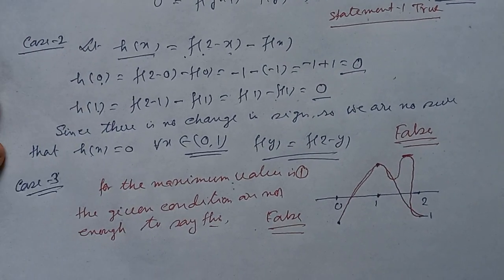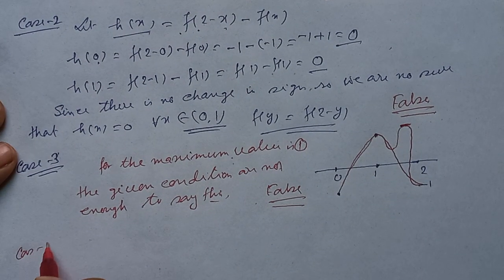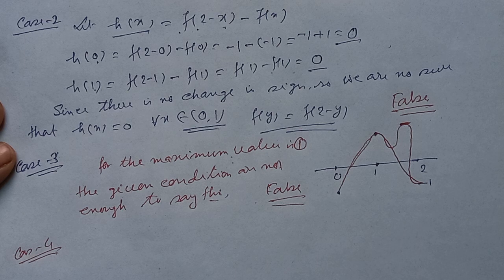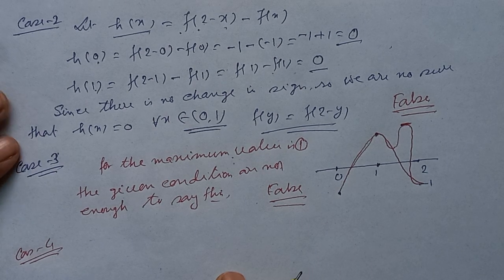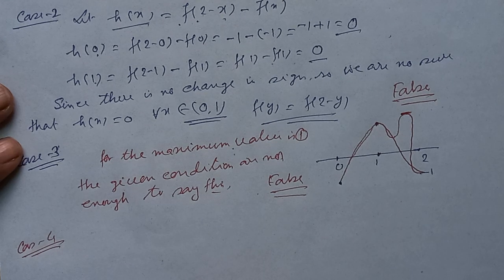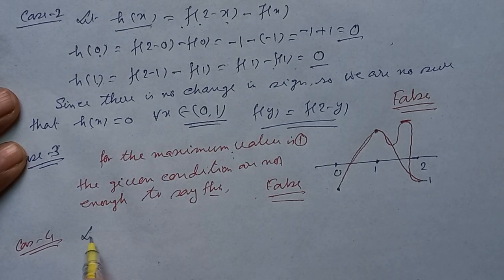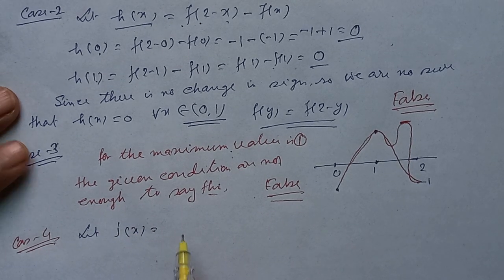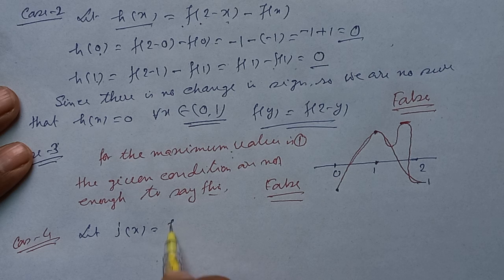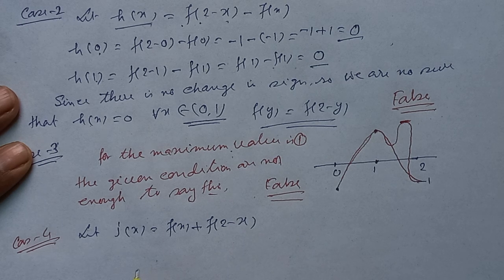For statement 4, there exists a y in (0,1) such that f(y) = -f(2-y). Let J(x) = f(x) + f(2-x).